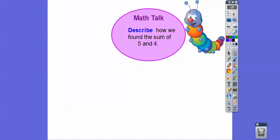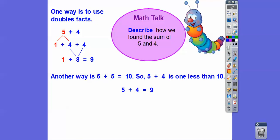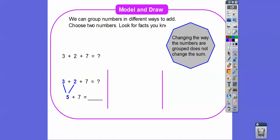All right, so describe how we found the sum of five and four. Well, one way is to use the doubles fact. We could change five to one plus four, and then we can double four and four. Four plus four is eight, so we have one plus eight, or nine. Another way is five plus five is ten, so five plus four is going to be one less than ten, which is nine. There's probably other ways that you might think of also.